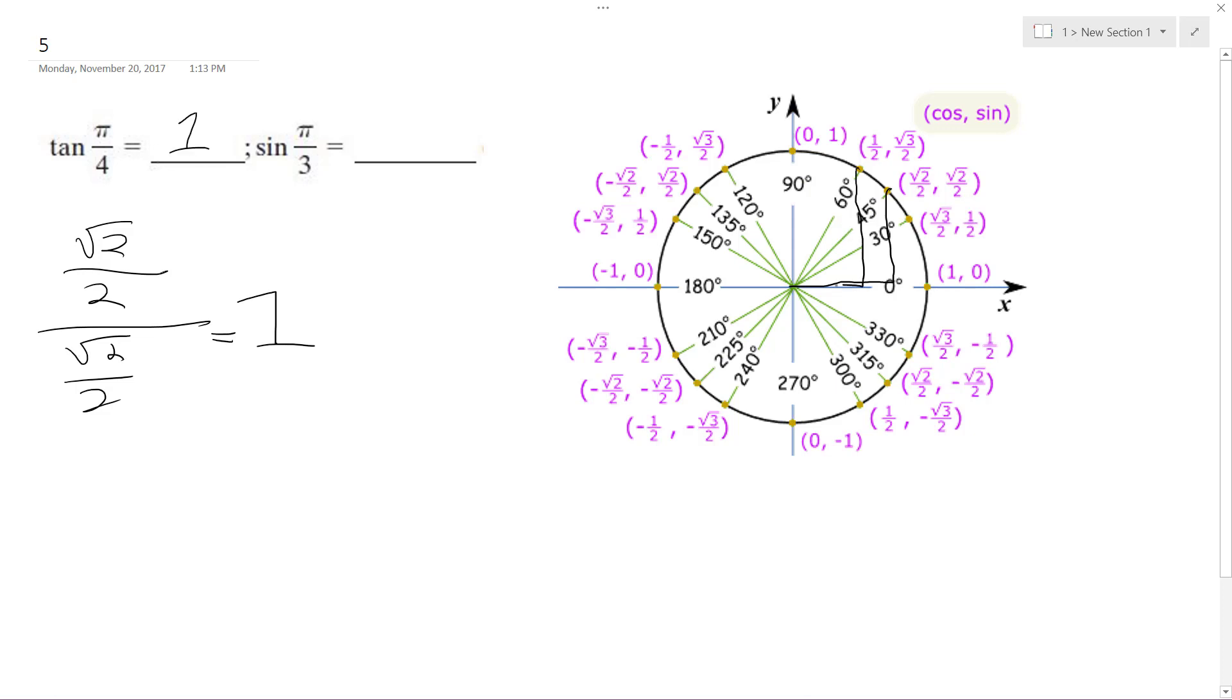π over 3, which is 60 degrees. Sine is y over r, so in this case, it's √3/2 over... let's see here.